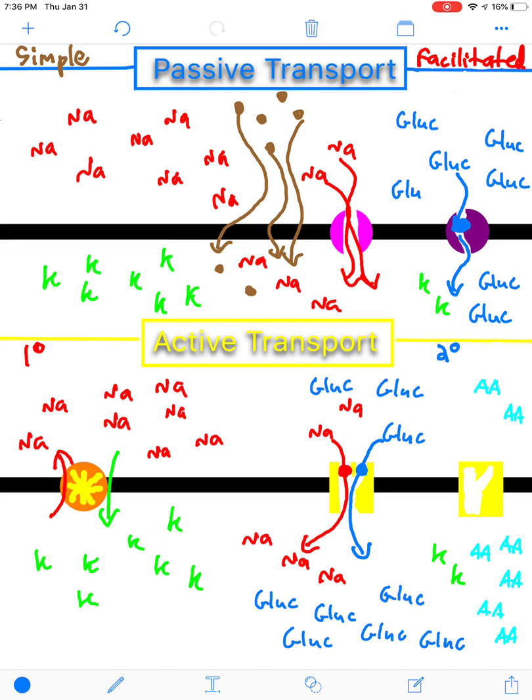So, going from an area where there's low glucose to an area where there's even higher glucose. So, this is symporter. This is a symporter because both sodium and glucose go in the same direction.